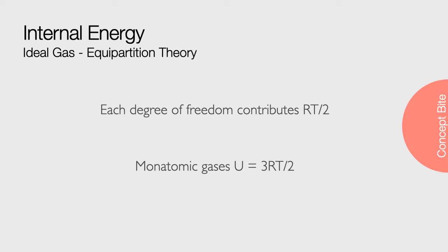Equipartition says that for an ideal gas, each degree of freedom contributes RT over 2 to the internal energy, and so for monatomic gases such as helium and neon, the internal energy U is 3RT over 2.